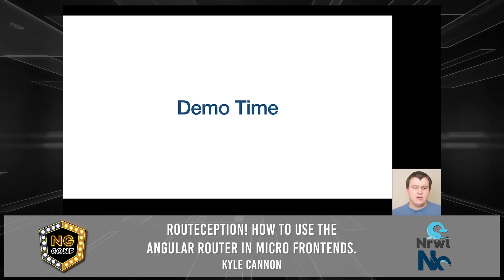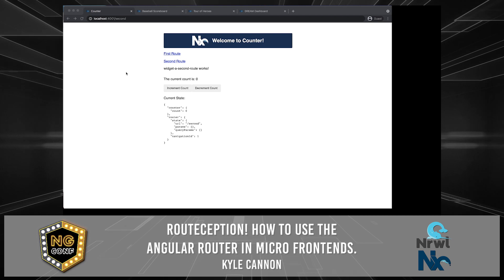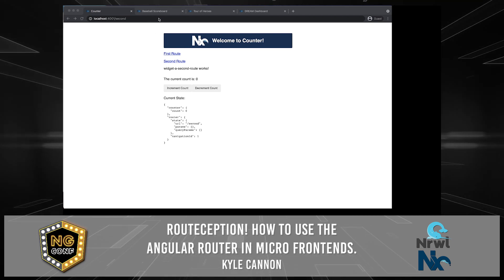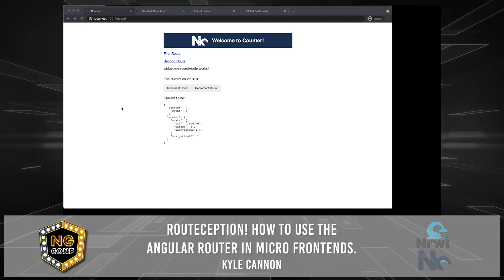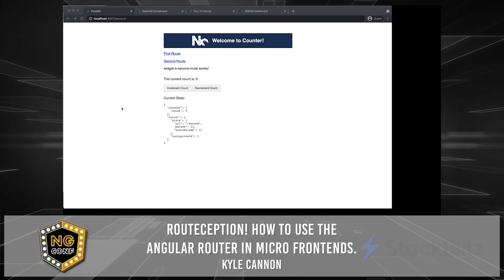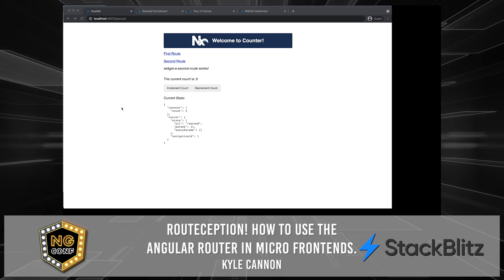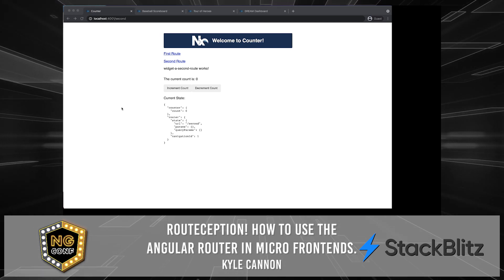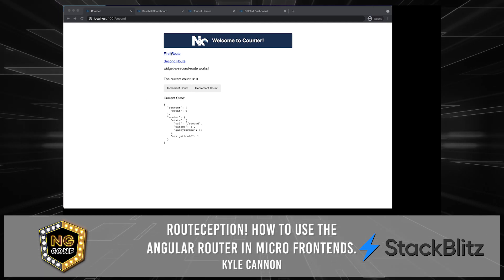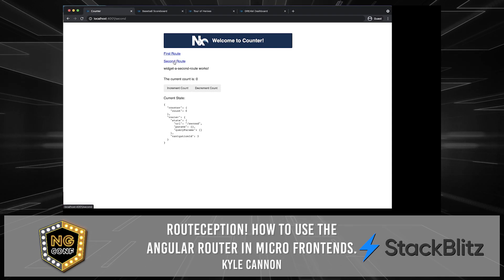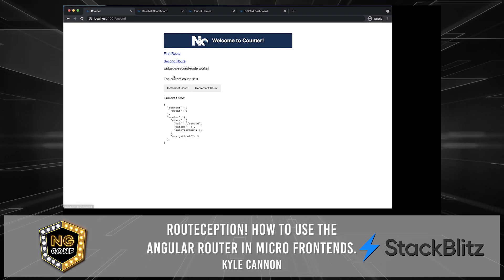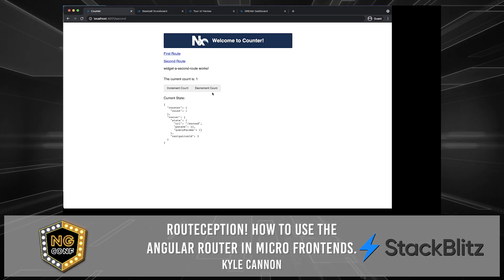And now let's take a look. We have a series of tabs at the top, each representing a separate shipped single page application with a remote entry point for module federation to combine them all together. To show how the routing works, we can click that first route. We can click that second route — it's going to work. We have ng-rx store as well.